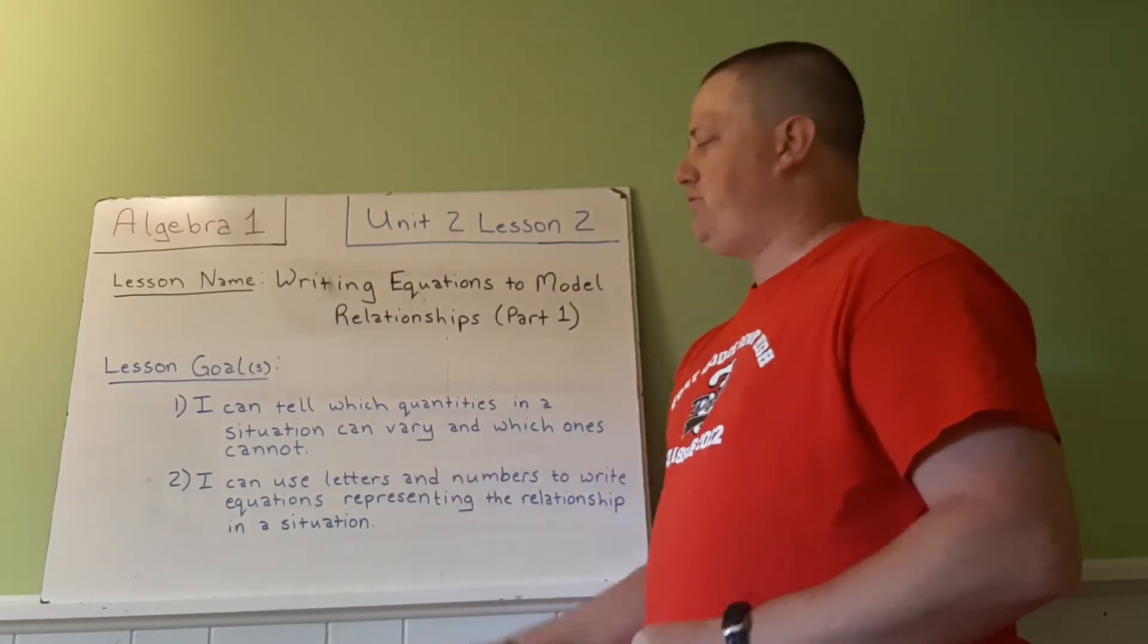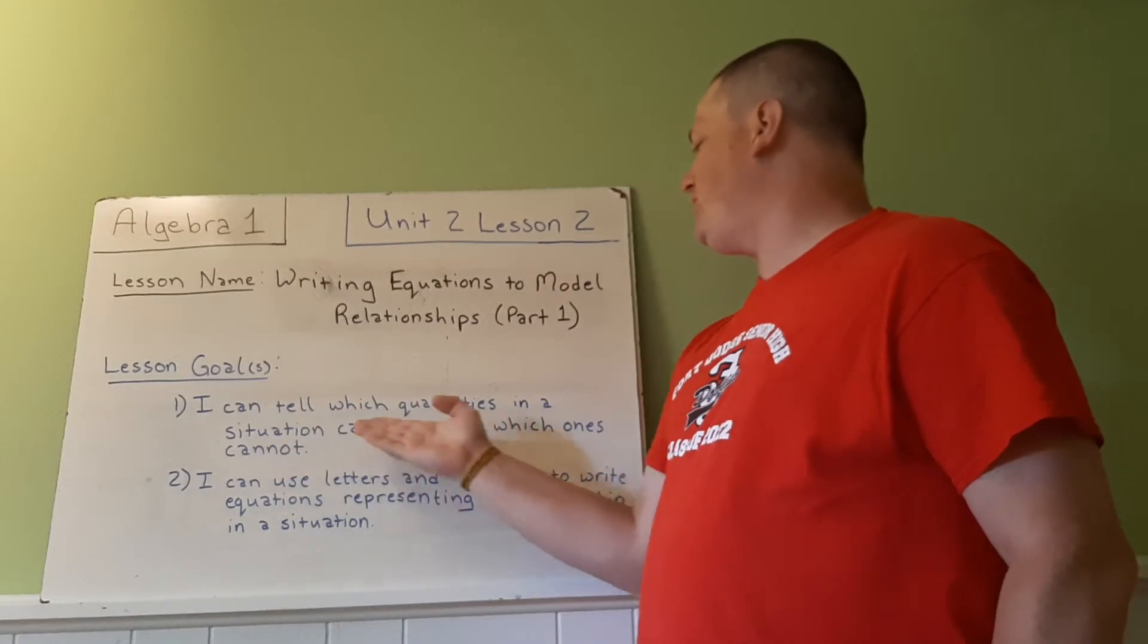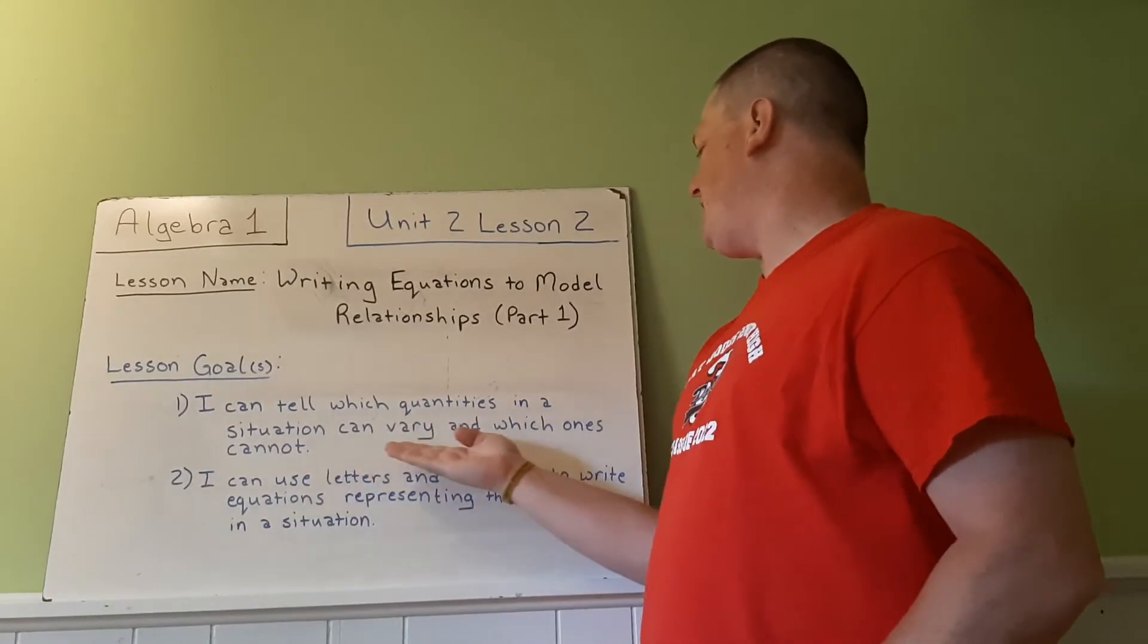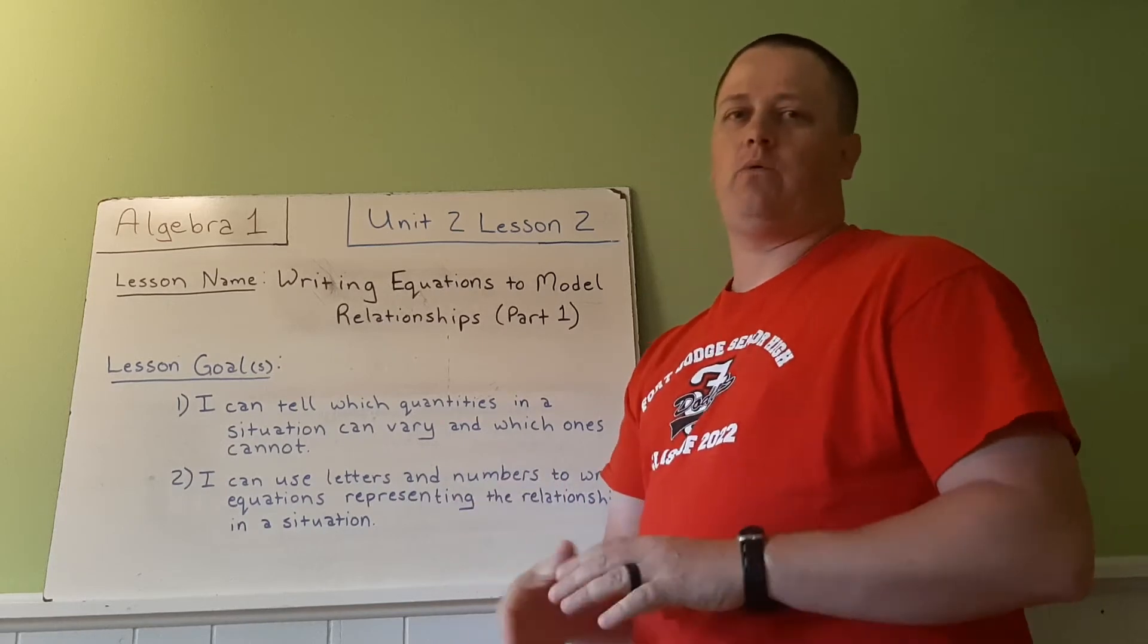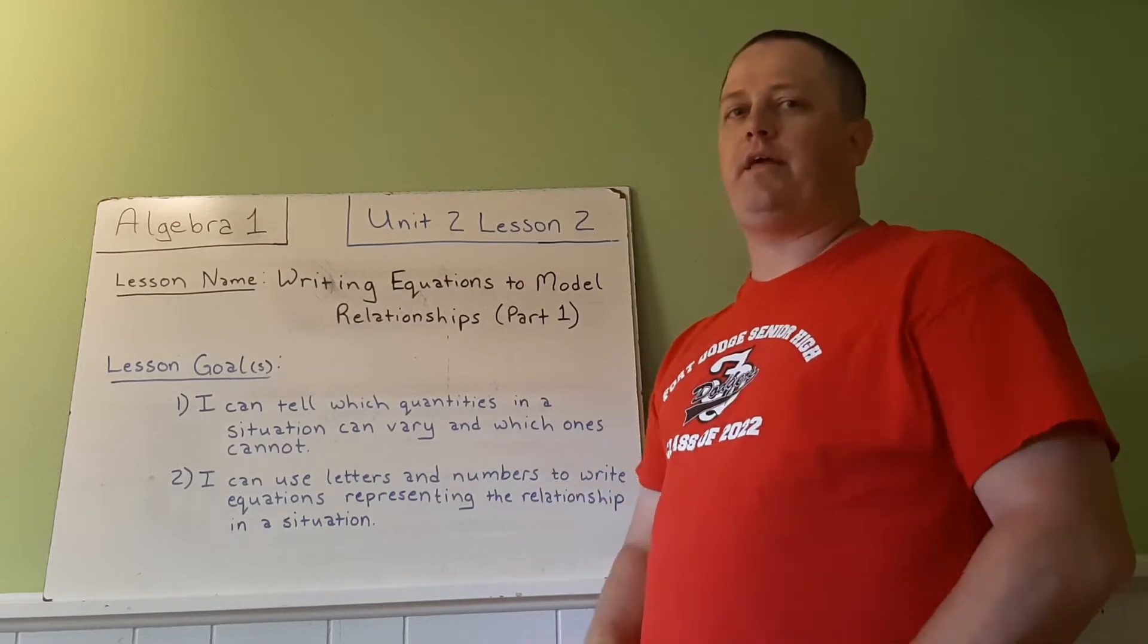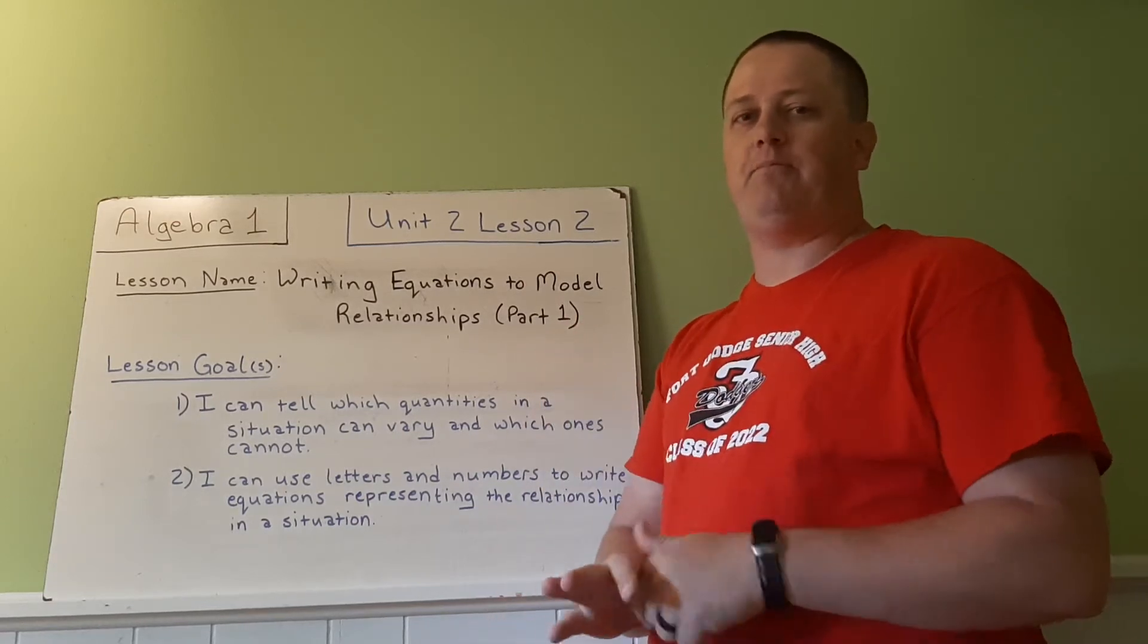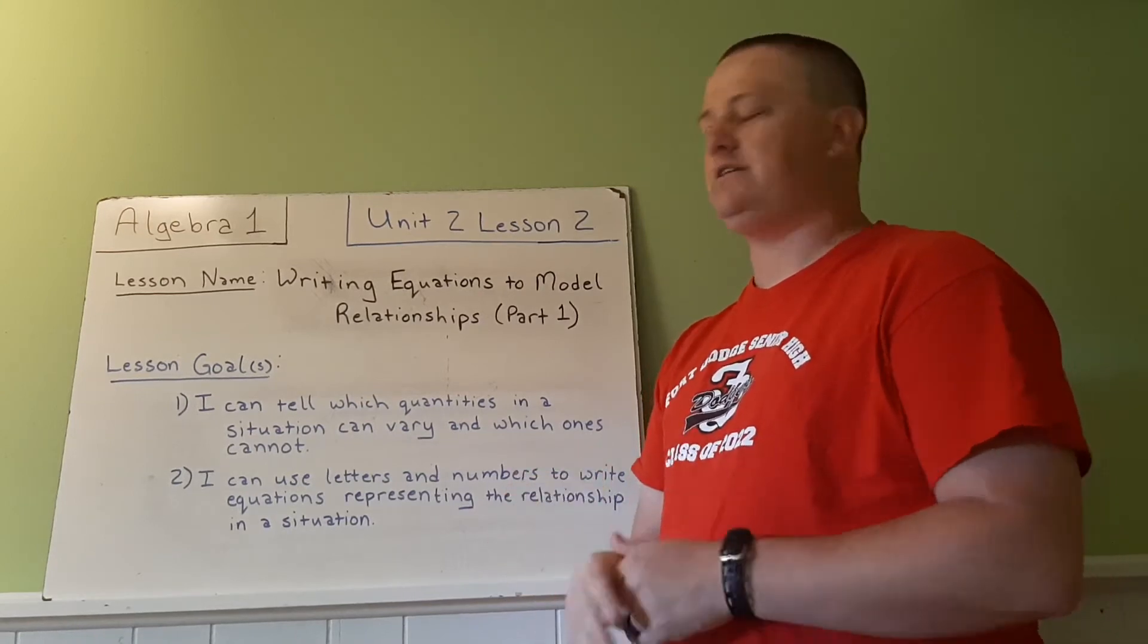Let's write down the lesson goals as I go through them. I can tell which quantities in a situation can vary and which ones cannot. Within a situation, there will be things that can change or vary, and then there will be other things that are stuck and have to be the way they are. We need to be able to pick those differences out.